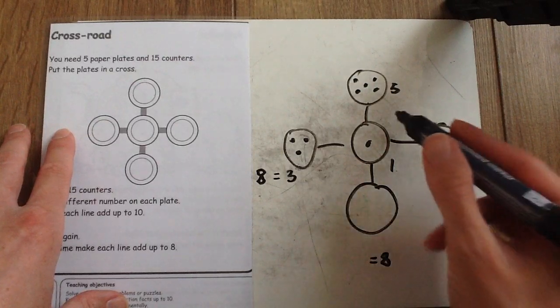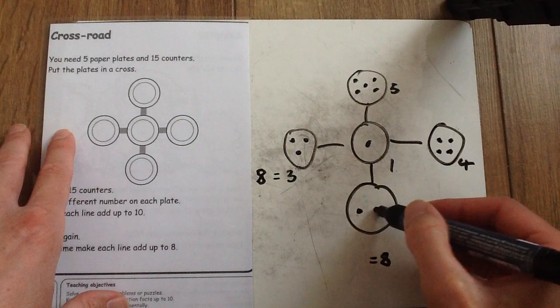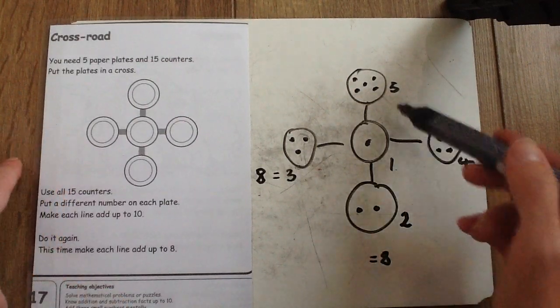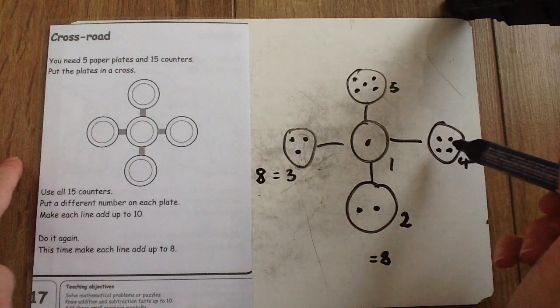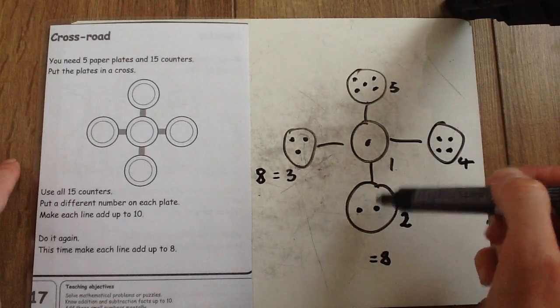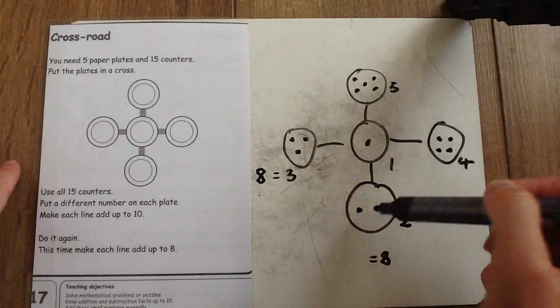5, 6, 7, 8. I must put 2 in that circle there. So now both the rows equal 8. I've only used 15 counters and each circle has a different number in it.